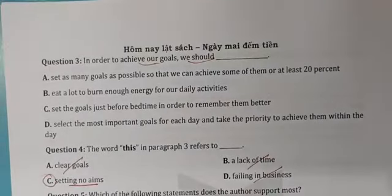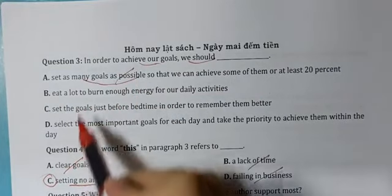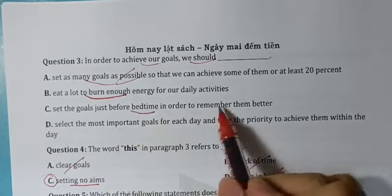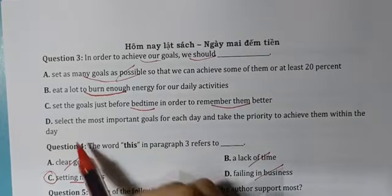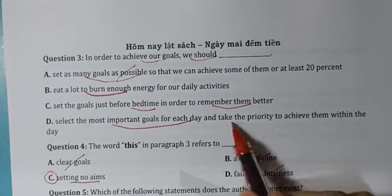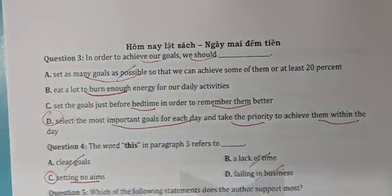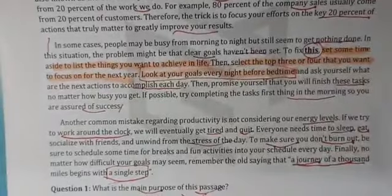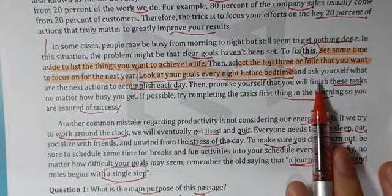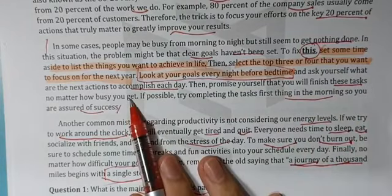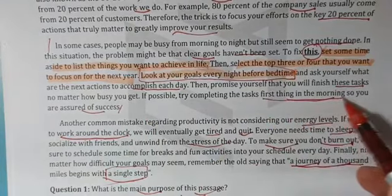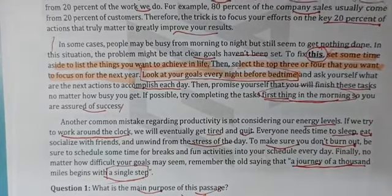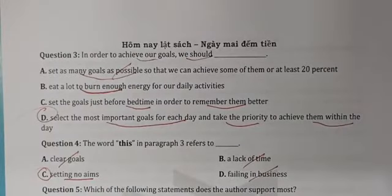Đáp án câu 3 là D: hãy lựa chọn những điều quan trọng nhất mỗi ngày, ưu tiên và hoàn thành trong vòng một ngày. Tự hứa với bản thân sẽ hoàn thành công việc dù bận đến đâu. Nếu có thể, hãy hoàn thành công việc vào buổi sáng vì buổi sáng là lúc chúng ta dồi dào năng lượng nhất. Công việc quan trọng thì ưu tiên buổi sáng.